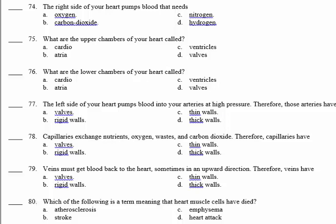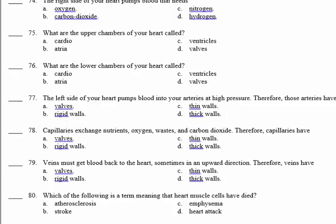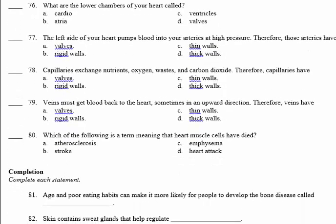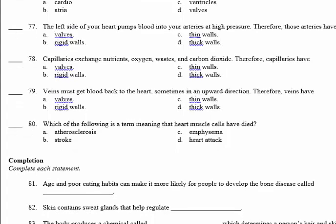Number 80: which of the following indicates that heart muscles have died? The answer is D — heart attack — meaning that part of the heart muscle is dead. Now we move to the complete section.